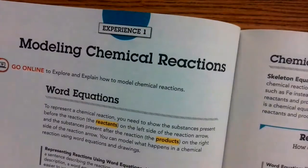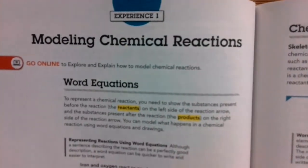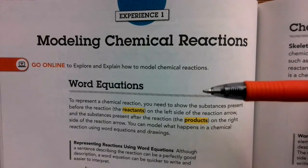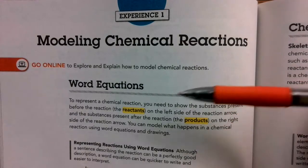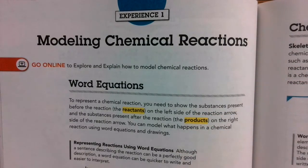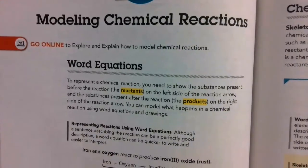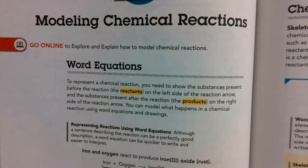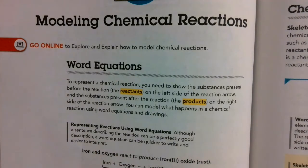To begin our discussion, we're going to be modeling chemical reactions, and to first understand it we're going to use word equations. It's kind of an easy way to introduce chemical reactions. Now there's two vocab words I want you to write down: the reactants and the products.